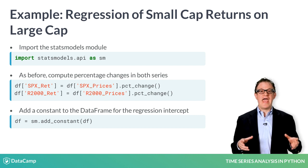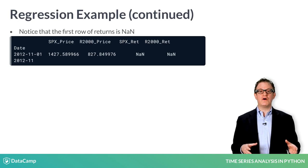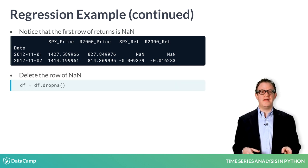The statsmodels method add_constant is a simple way to add a constant. Notice that the first row of the return series is NaN. Each return is computed from two prices, so there is one less return than price. To delete the first row of NaNs, use the Pandas method dropna.